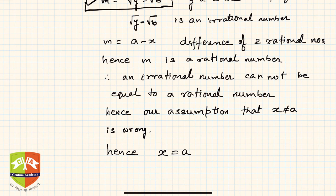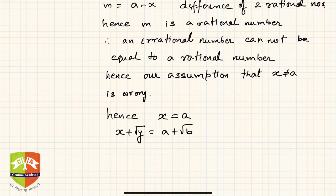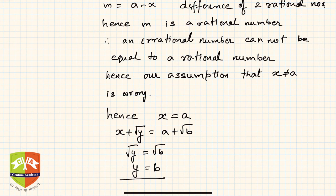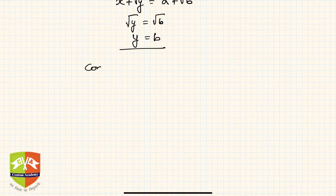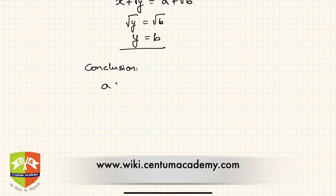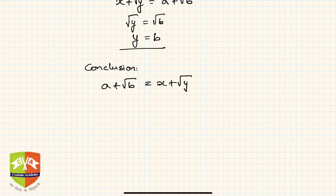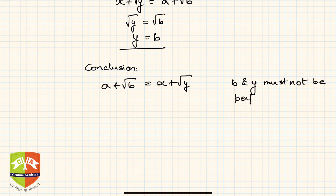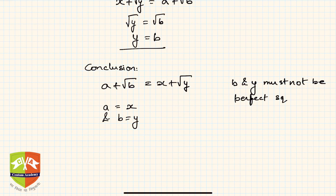Hence x must be equal to a. And since x plus root y equals a plus root b, and x equals a, we can say root y equals root b, and hence y equals b. So the conclusion is: a plus root b equals x plus root y, where b and y are not perfect squares, then a equals x and b equals y.